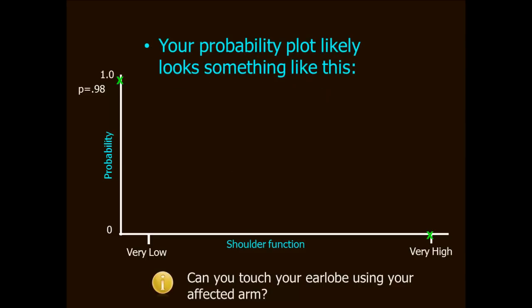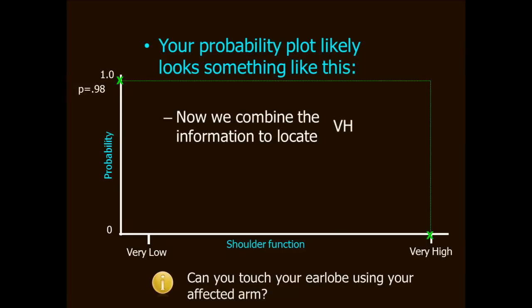Maybe your plot looks something like this. The x representing VH's level of trait is very far to the right indicating a lot of shoulder function, and the x representing the probability of saying yes to this item is very high. I've estimated here at about 0.98. Now as we did in the other slide, we're going to combine that information. And you can see that on my plot VH goes about here.